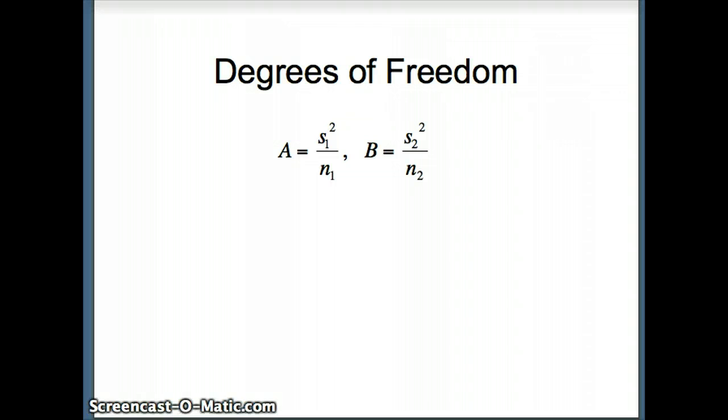So here's how we do the degrees of freedom. It is a somewhat complex formula, but try to stay with me. We're going to define a as s₁² over n₁, and we're going to define b as s₂² over n₂. So variance divided by the number, variance divided by the number.